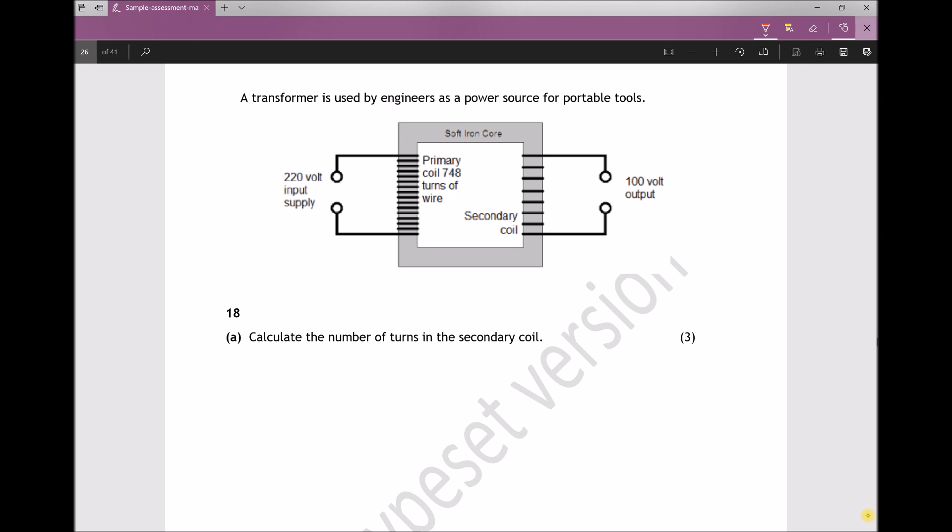On the input side, we have an input voltage of 220 volts and we're trying to achieve an output voltage of 100 volts. We're also given some information about the number of turns on the primary coil. There's 748 turns on the primary coil, but it doesn't specify how many there are on the secondary coil.